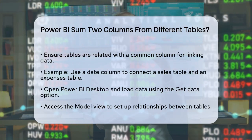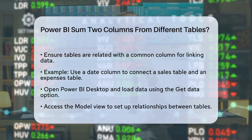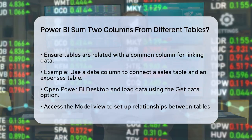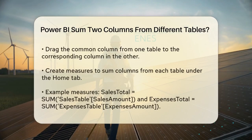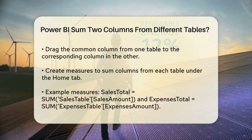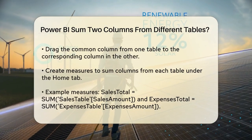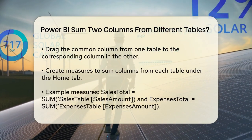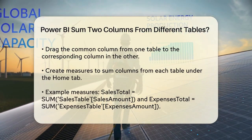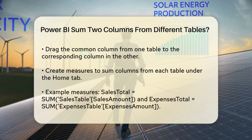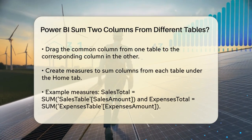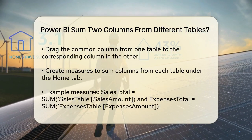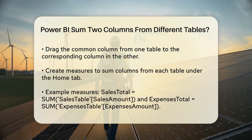To start, open Power BI Desktop and load your data using the Get Data option. Once your data is in the Data pane, you can begin setting up the relationship between the tables. Go to the Model view and drag the common column, like the Date column, from one table to the corresponding column in the other table. This establishes the relationship needed for your calculations.